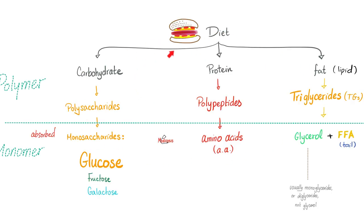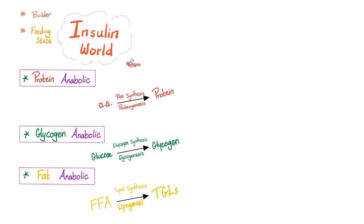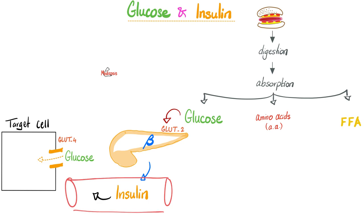In the feeding state — insulin land — you ate, you digested, you absorbed. Insulin will build up proteins, build up glycogen, build up triglycerides, by dephosphorylating the key enzymes. How did the pancreas know you just ate? It has a sensor known as GLUT2, the door that lets glucose into the beta cell. The beta cell responds by secreting insulin to the bloodstream. Insulin knocks on the door of the cell, saying: 'Take that glucose in.' This is GLUT4 — it is insulin-dependent. GLUT2 happened before insulin was released, so GLUT2 is insulin-independent, but GLUT4 is insulin-dependent.